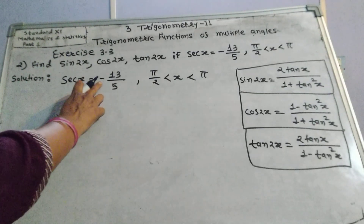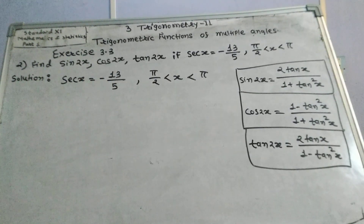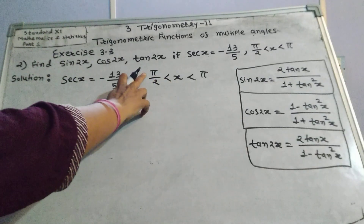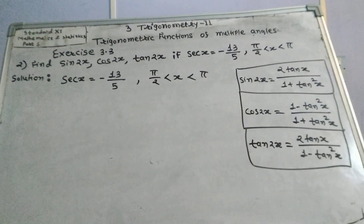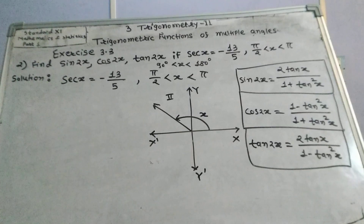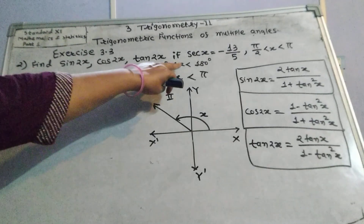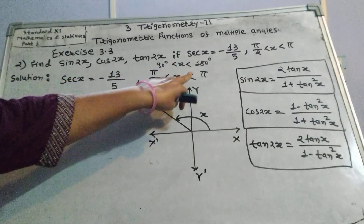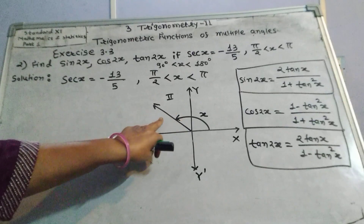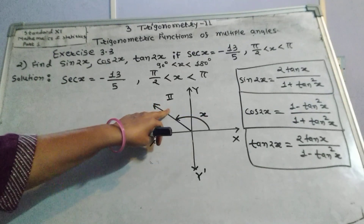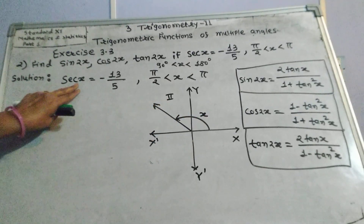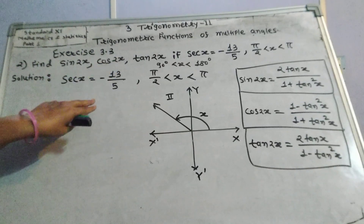sec x equals negative 13 upon 5, and angle x lies between 90 degrees and 180 degrees, meaning angle x lies in the second quadrant. Therefore, since angle x is greater than 90 degrees and less than 180 degrees, it lies in the second quadrant. Therefore sec x equals negative 13 upon 5.